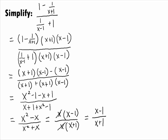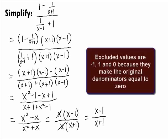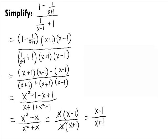Note that the values that would be excluded from the domain of the original rational expression are negative 1, 1, and 0. These values would make the original denominators equal to 0. Thank you.